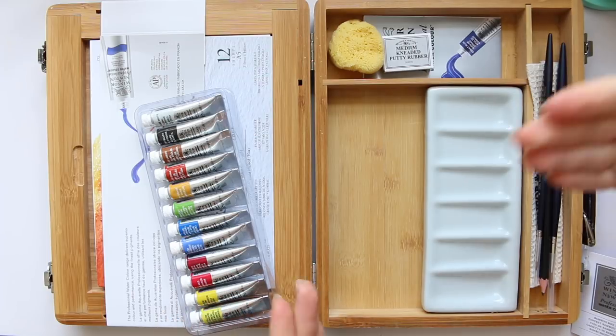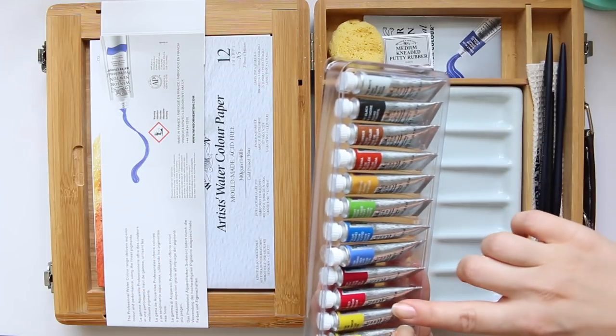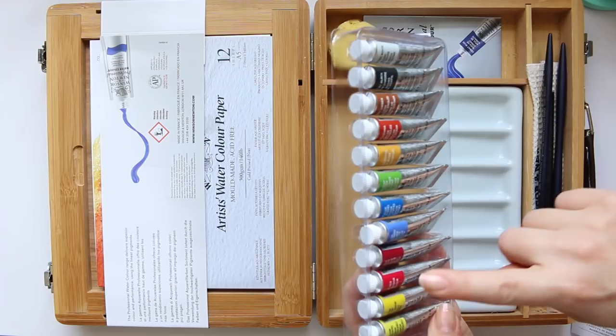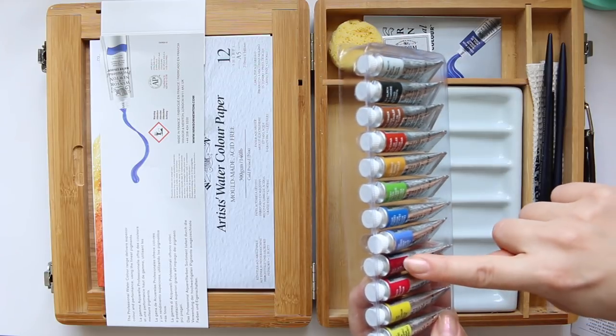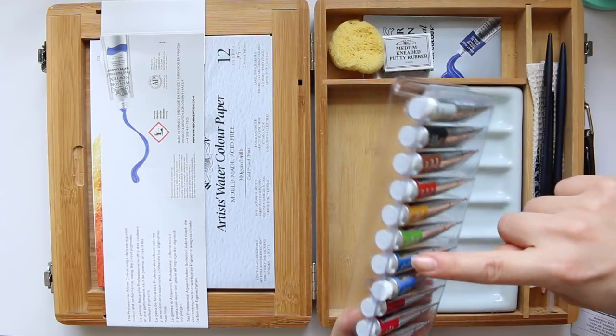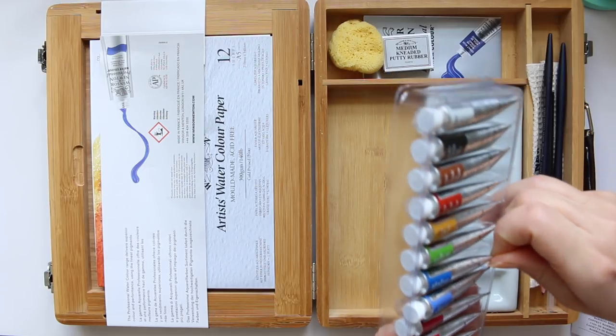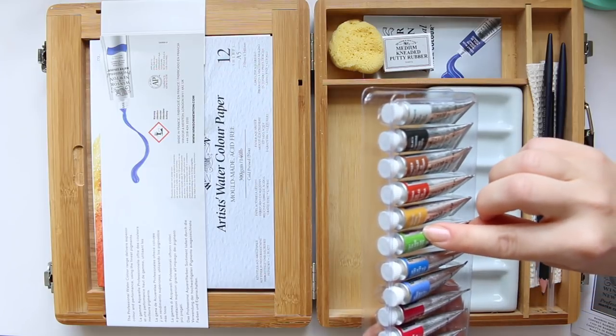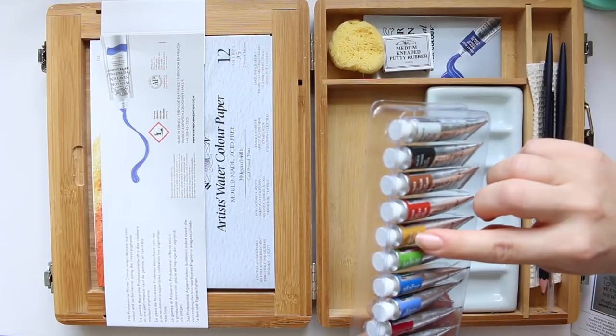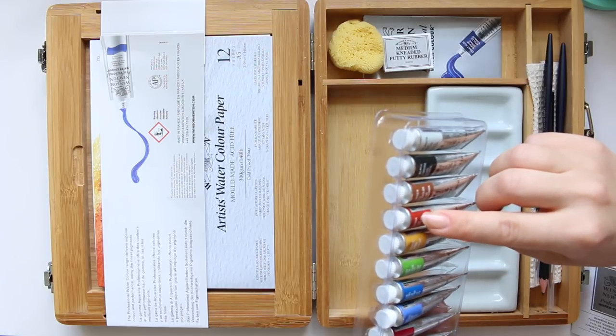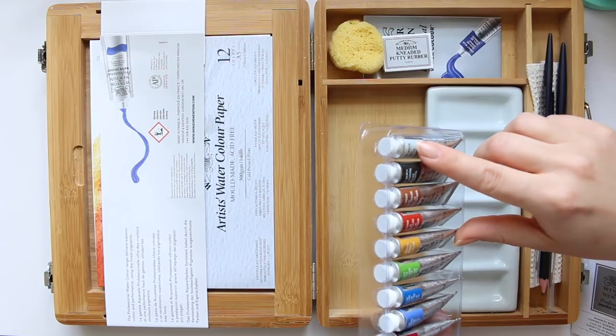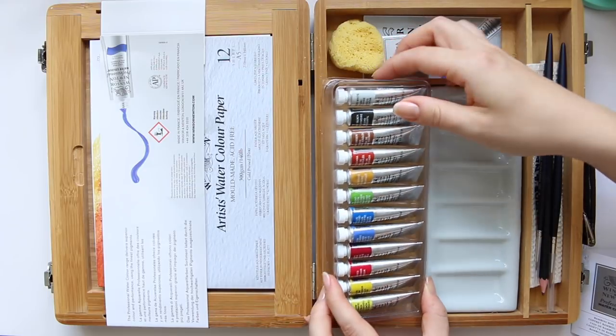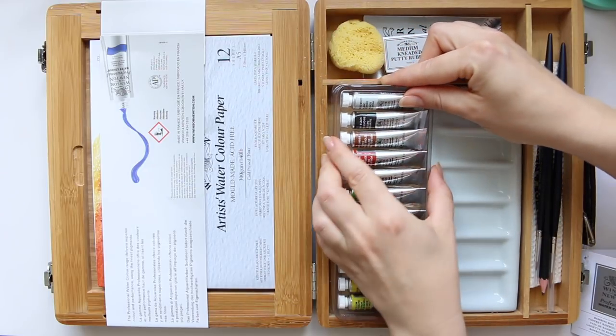So the 12 colors that you get are lemon yellow, Winsor yellow, Winsor red, alizarin crimson, French ultramarine, Winsor blue green shade, permanent sap green, this is the one I have, and then there is yellow ochre, burnt sienna, burnt umber, ivory black, and Chinese white. So I will probably ask my dad permission to swatch them out after I gift it to him and he has his play with the watercolors.